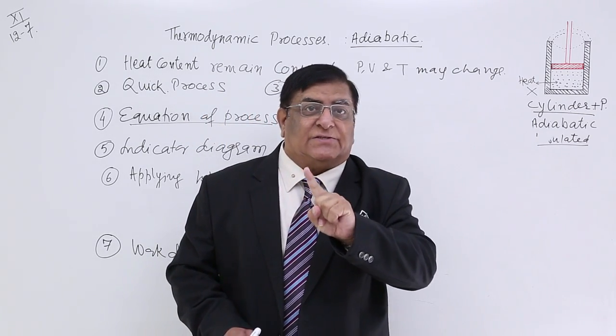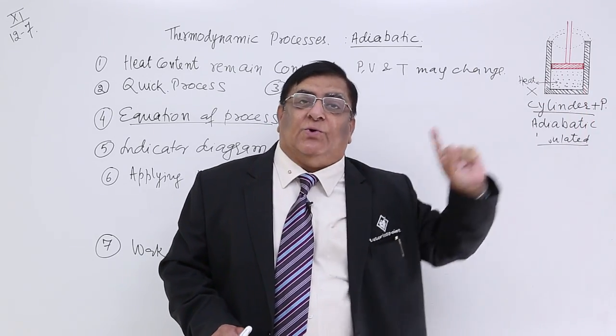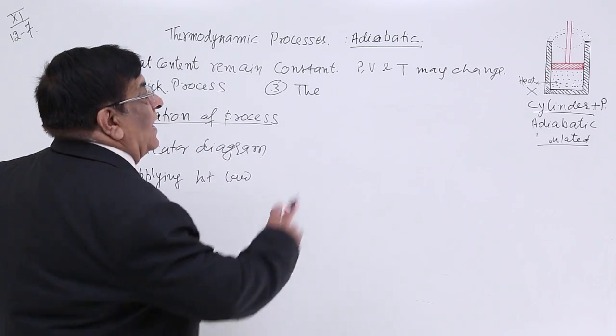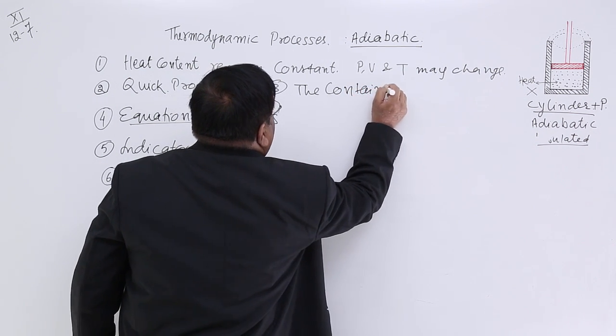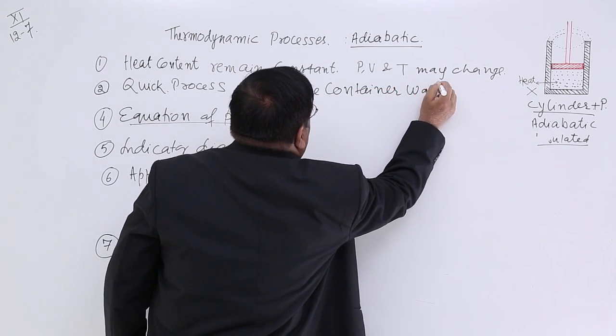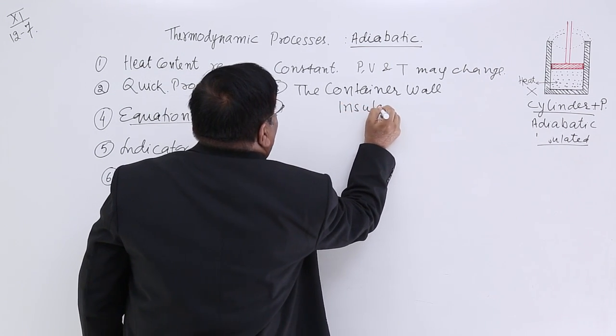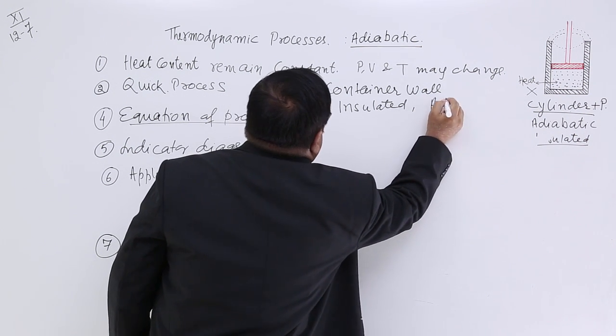So, adiabatic processes are quick. Isothermal processes were slow because we wanted to give it time for heat to go out. In adiabatic, we keep it quick process. How is the container? The container wall.